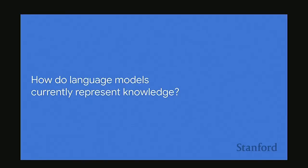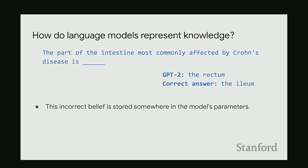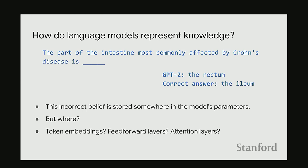The first part of this talk is about how language models currently represent knowledge. Looking at your curriculum, I see there's another lecture on knowledge editing coming up — this will be an introduction to that. Returning to our earlier prompt, we have a model that's close to getting a correct answer but not quite. This incorrect belief is clearly stored somewhere in the model's parameters. A GPT-style model is a transformer with token embeddings, a feed-forward network, and an attention network — so where exactly is the knowledge stored?